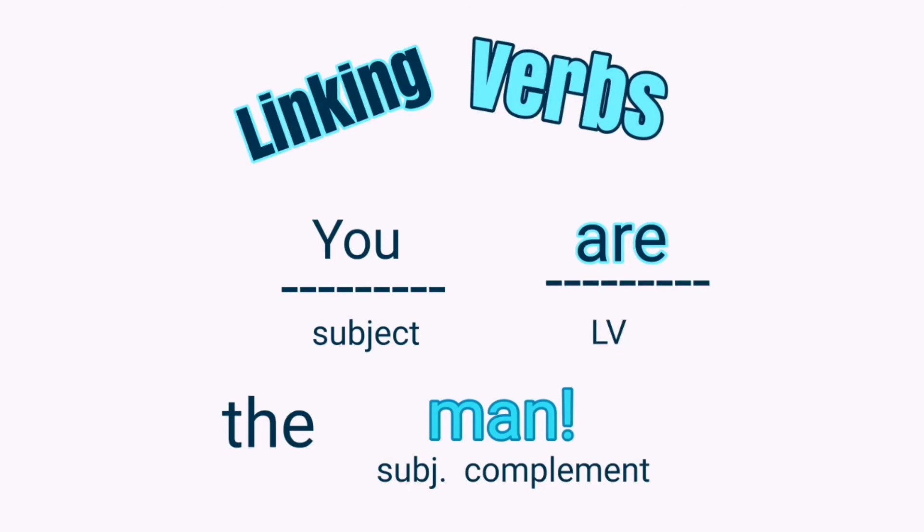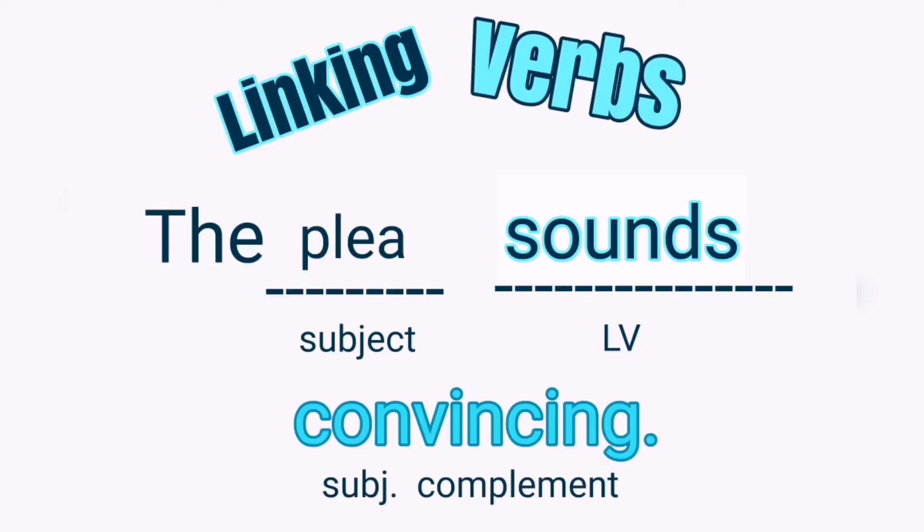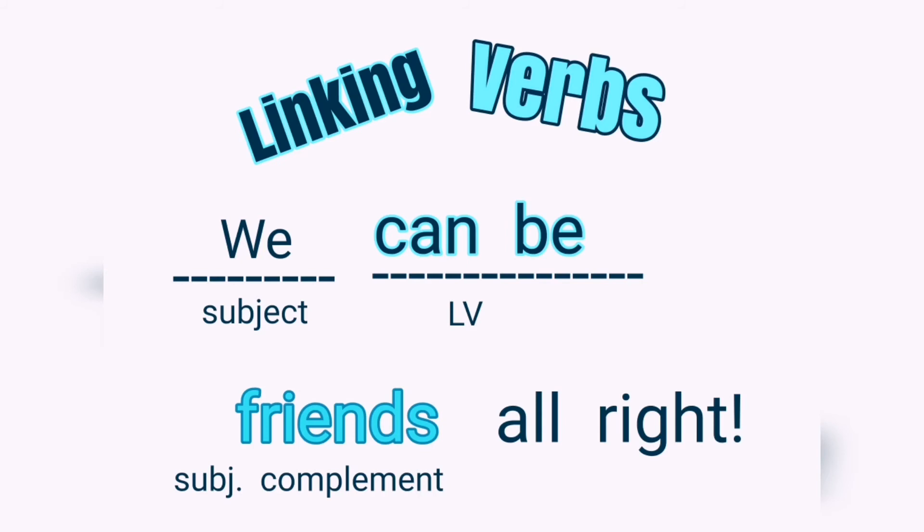Now, let's use a couple of them in sentences. You are the man. The plea sounds convincing. We can be friends all right. So remember that linking verbs are most appropriate to use if we want to identify the subject in our sentence, or if we want to describe or modify what we're talking about.